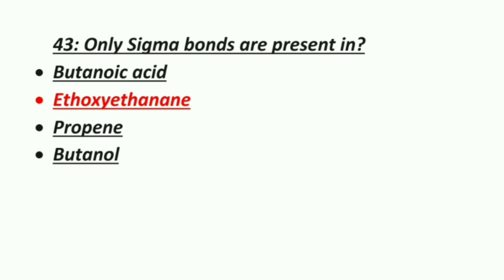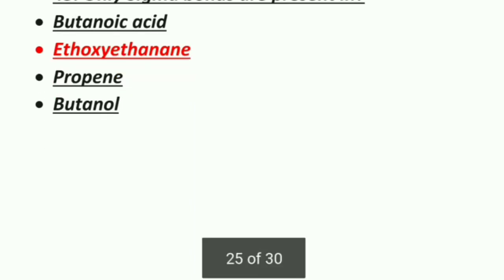Forty-third MCQ: only sigma bonds are present in — Option 1: Butanoic acid, Option 2: Ethoxyethane, Option 3: Propane, Option 4: Butanol. The correct answer is ethoxyethane.